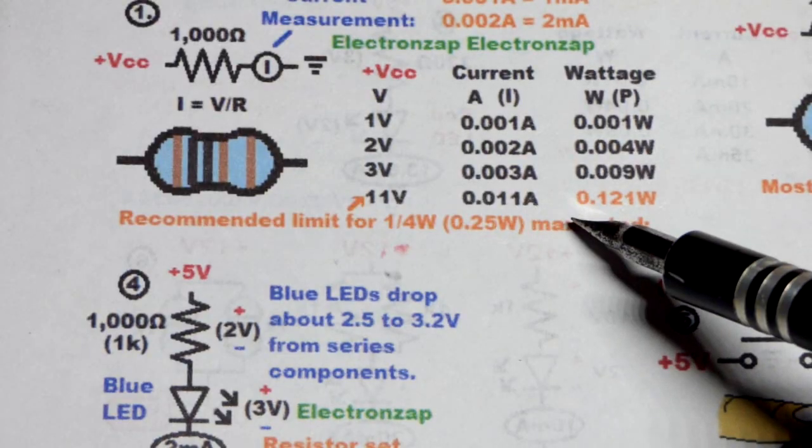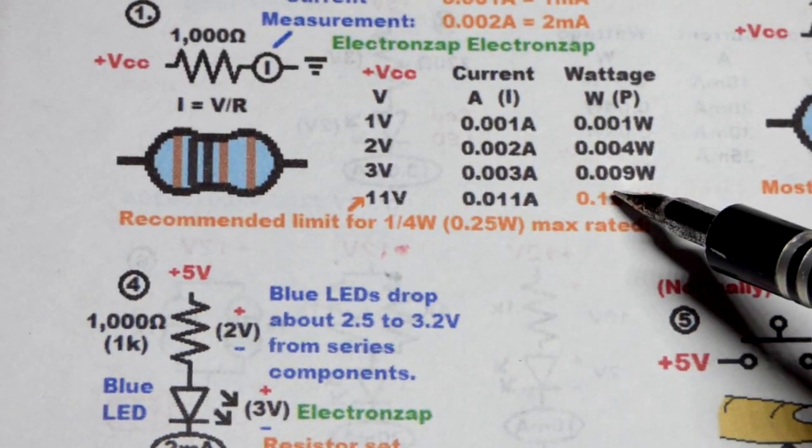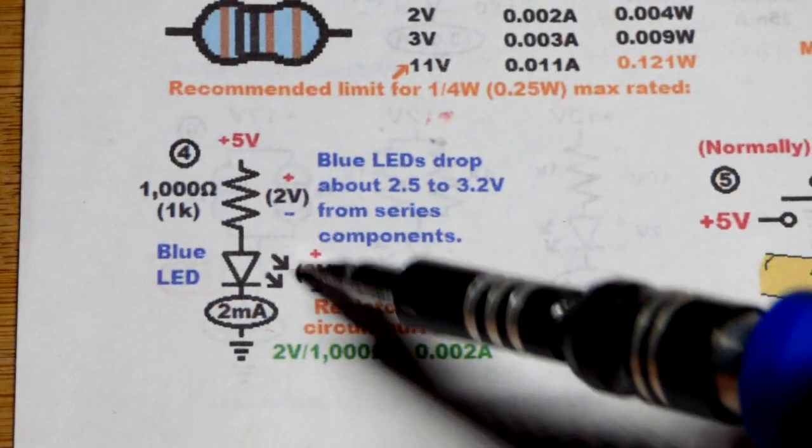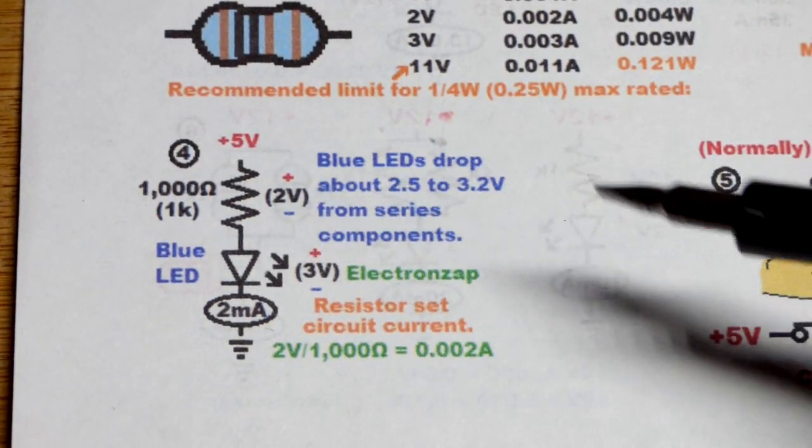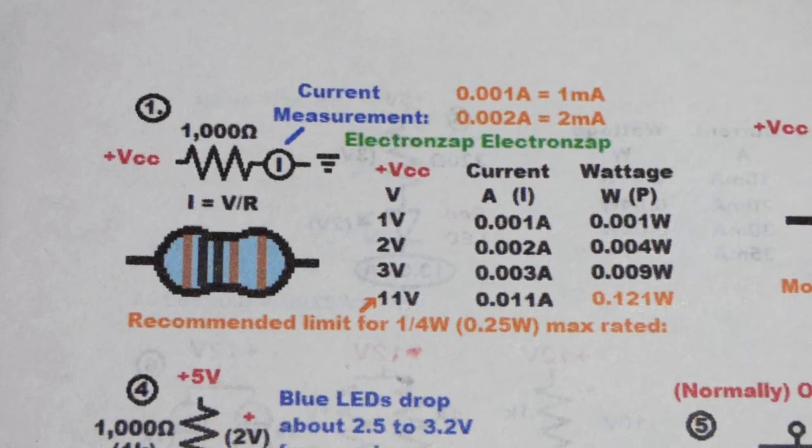So the resistor is going to get less hot in that particular circuit. If we're using 12 volts instead of five with the blue LED, it drops about three volts. If you got five volts, at least about two volts across the 1000 ohm resistor.